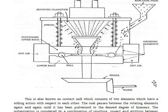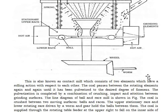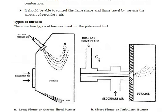This is also known as a contact mill, which consists of two elements that have a rolling action with respect to each other. The coal passes between the rotating elements again and again until it has been pulverized to the desired degree of fineness. The pulverization is completed by a combination of crushing the coal and attrition between grinding surfaces. The line diagram of ball-and-race milling is shown in the figure.